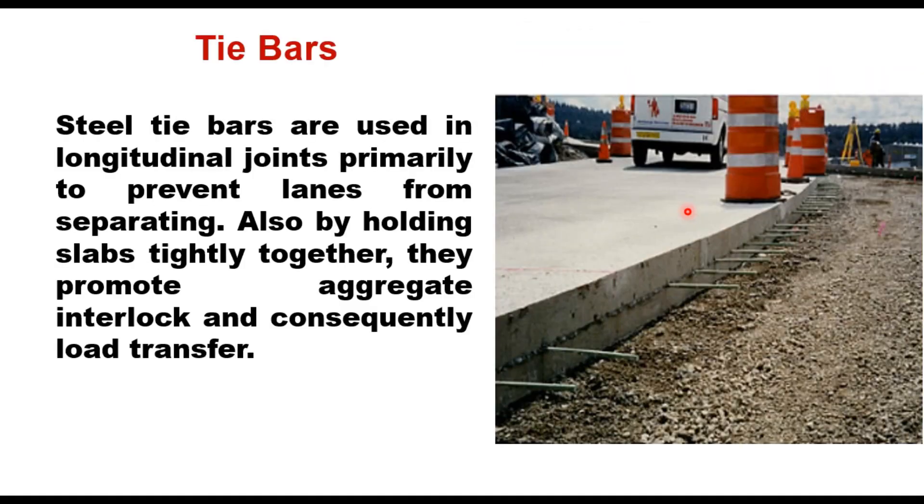Another is longitudinal joints and here steel bars are provided. These are called tie bars and they are used primarily to prevent lanes from separating. Also by holding slabs tightly together, they promote aggregate interlocking and consequently load transfer.